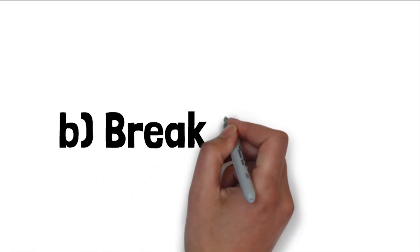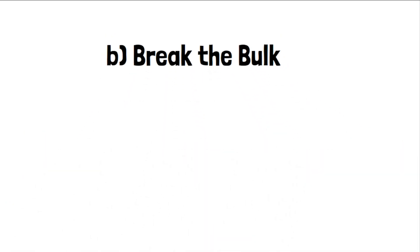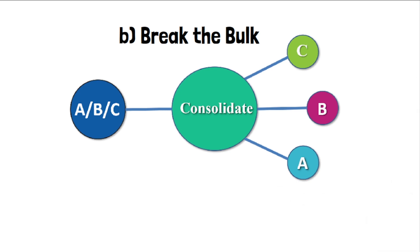The second function is breaking the bulk, which is the opposite of consolidation. A bulk quantity of goods is received from one person and then distributed to different plants, consumers, or areas.